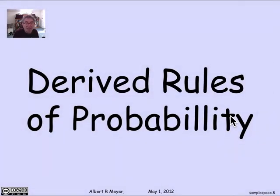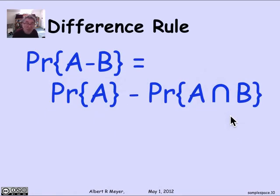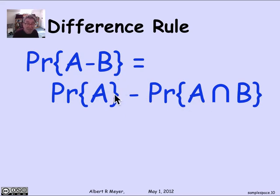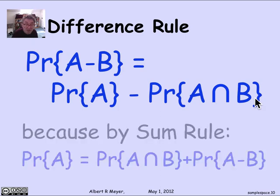Let's quickly point out some rules that are corollaries — derived rules of probability theory that follow from the countable sum rule. The first is the difference rule: the probability of A minus B is equal to the probability of A minus the probability of A intersection B. Notice how much this looks like the difference rule for cardinalities — the cardinality of A minus B equals the cardinality of A minus the cardinality of A intersection B. Indeed, the proof is just like the proof for cardinality, following directly from the sum rule for probabilities, which corresponds to the sum rule for cardinalities.